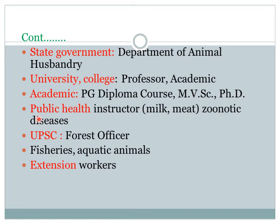A veterinarian can perform the role of public health inspector, where there is health of the public — as a milk inspector or meat inspector in a slaughterhouse. Veterinarians also deal with zoonotic diseases — diseases that transfer from man to animal and animal to man, called zoonotic disease.